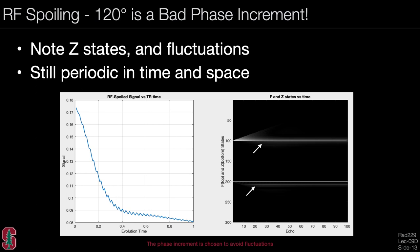Using 120 degrees is also a bad choice of the phase increment. With that increment, you end up in a periodic pattern of RF phases. The steady state shows a periodic oscillation, and in the coherence pathway diagram there are some non-zero F-minus states and quite a bit of Z-zero magnetization storage, causing variation in the steady state.